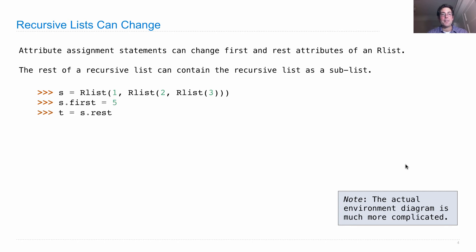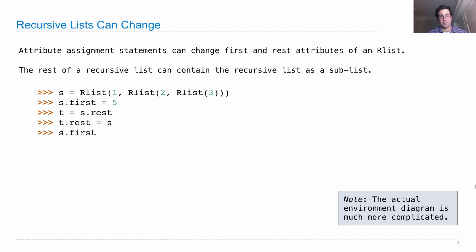If we set S.first to be 5, and T to be S.rest, here's something interesting we can do: we can set the rest of T to be S. So what have I built? Try to figure out what the following two things evaluate to. What's S.first? And what's S.rest.rest.rest.rest.rest.rest.first?